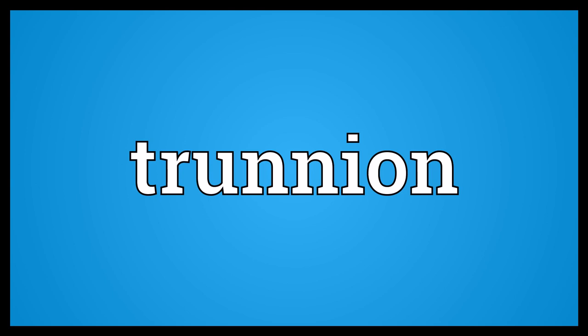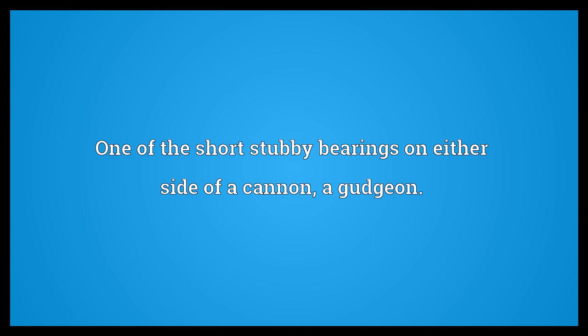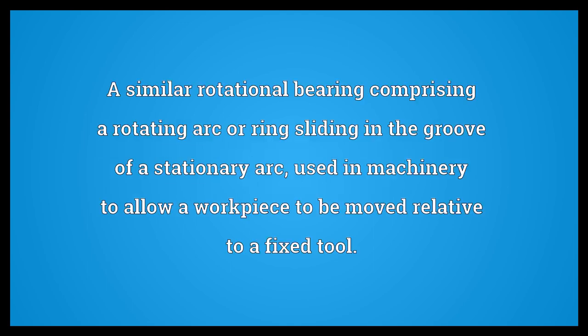Trunnion: one of the short stubby bearings on either side of a cannon. A gudgeon: a similar rotational bearing comprising a rotating arc or ring sliding in the groove of a stationary arc, used in machinery to allow a workpiece to be moved relative to a fixed dual.